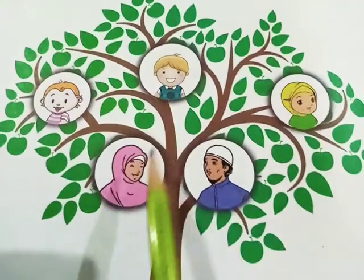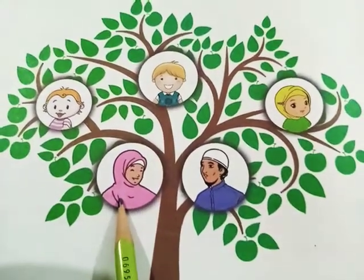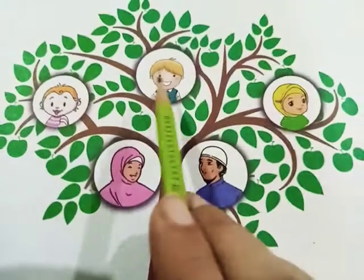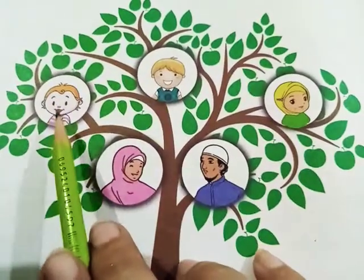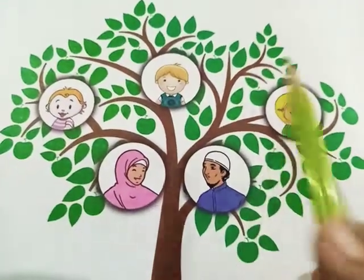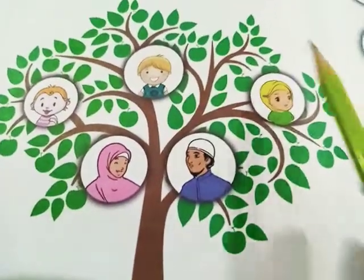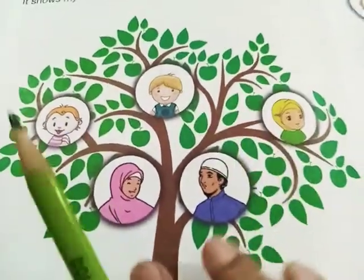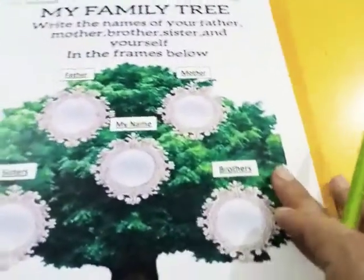This is Ali. This is Ali's mother. This is Ali's father. This is Ali's brother. This is Ali's sister. This is the family tree. Now we give you a worksheet.